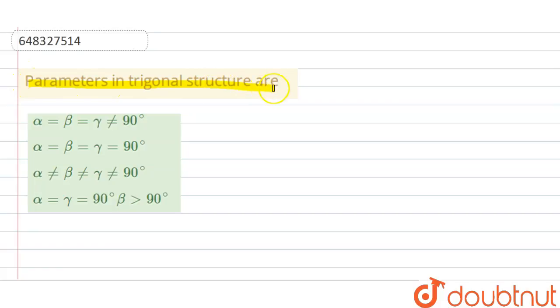Parameters in trigonal structure or dash trigonal is also known as rhombohedral lattices, rhombohedral lattice, which means there is no angle equal to 90 degrees.